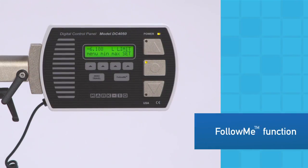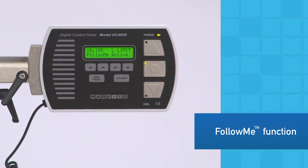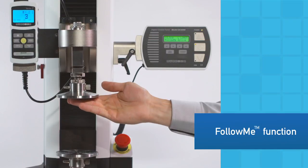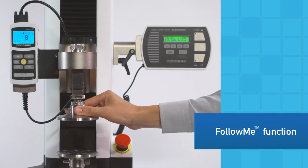Easily position the crosshead for sample setup with the unique follow-me function. Simply push and pull on the load cell or force gauge to move the crosshead. The greater the force, the faster the speed.